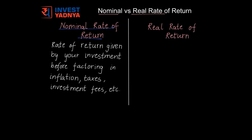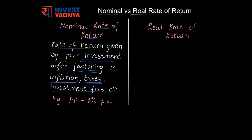Nominal rate of return is the rate of return given by your investment, but before factoring in inflation, any applicable taxes, investment fees, etc. Let us assume you have put your money into a savings instrument like a fixed deposit, and your FD is giving you returns of about 8% on an annual basis. This return of 8% is before factoring in inflation, any applicable taxes, etc. So this 8% is your nominal rate of return on your fixed deposit.